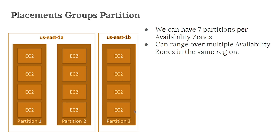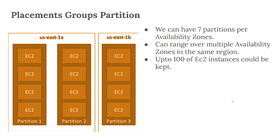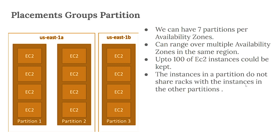Each partition represents a rack in AWS. By having many partitions, we ensure our instances are distributed across many hardware racks and are safe from a rack failure. Unlike Cluster where all EC2 instances are interconnected and one failure causes all to fail simultaneously, Partition is very different. Up to 100 EC2 instances can be kept, and instances in one partition do not share racks with instances in other partitions.